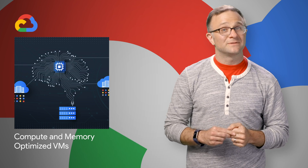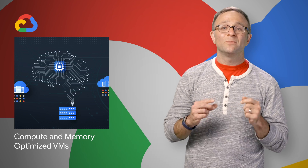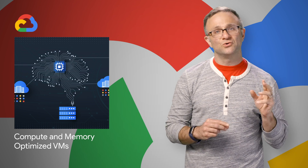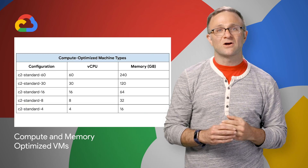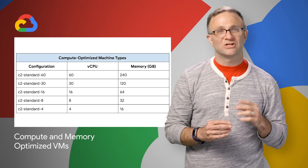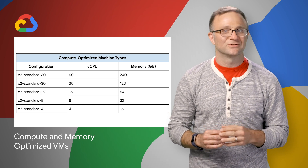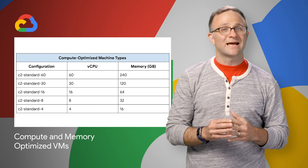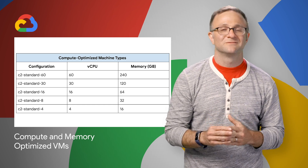Compute-optimized VMs and memory-optimized VMs will be available for Google Compute Engine. Both are based on second-generation Intel Xeon scalable processors. A link to sign up for early access is on the post.